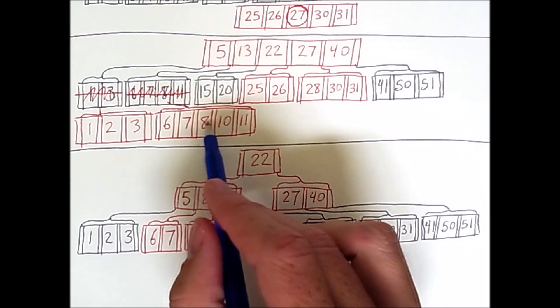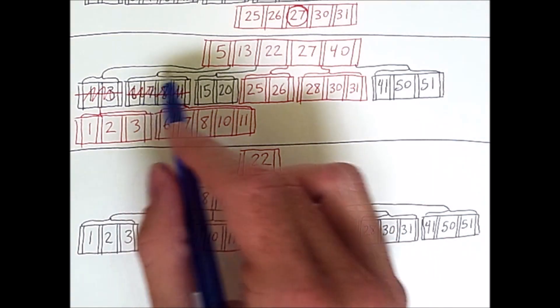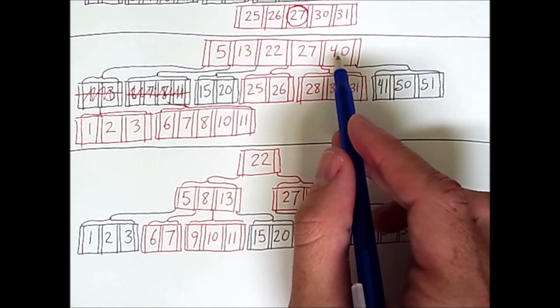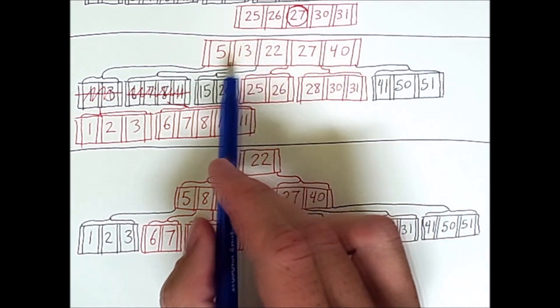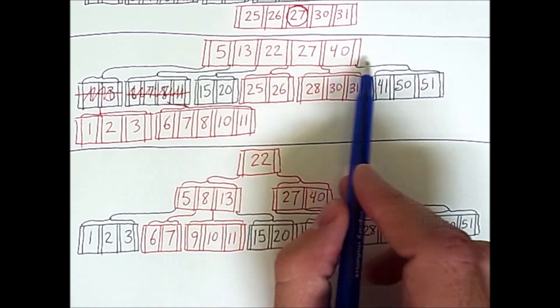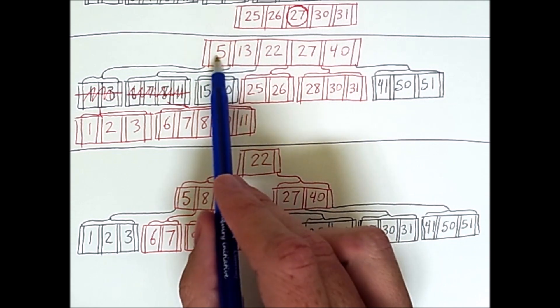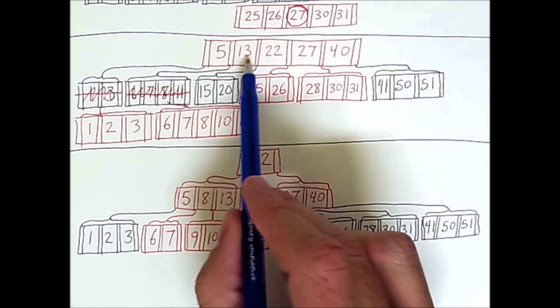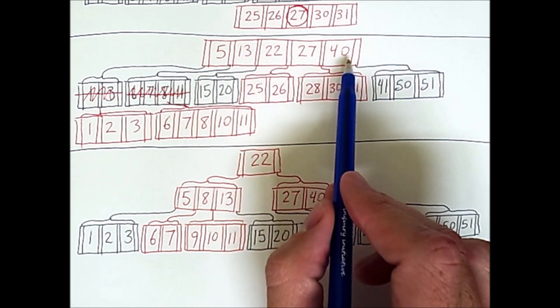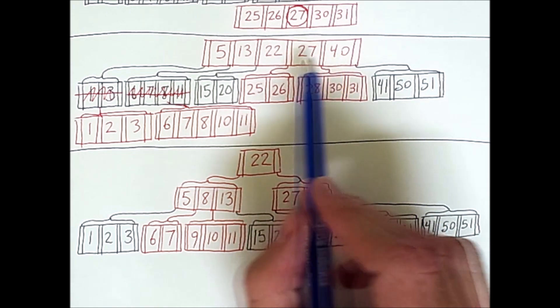However, when the 8 was promoted up to this level, which was the root at the time, it put too many keys in this level. So we had 5, and then an 8, and then 13, 22, 27, 40, but that would have been too many keys.